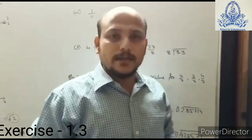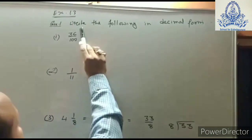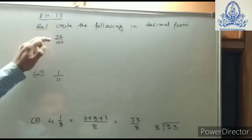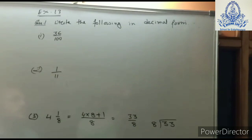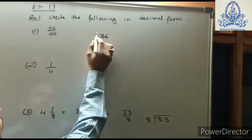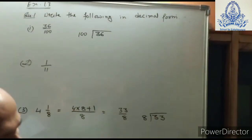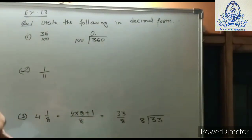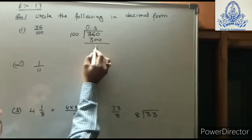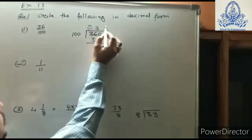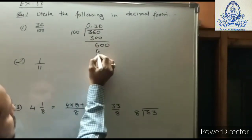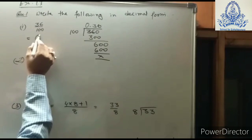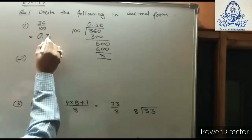Now let's move to exercise 1.3. The first question asks us to write fractions in decimal form. For 36 upon 100, we use the division method — 36 divided by 100. Since 36 is less than 100, we use a decimal point, giving 360 divided by 100 is 3, remainder 60; then 600 divided by 100 is 6. So 36/100 equals 0.36.